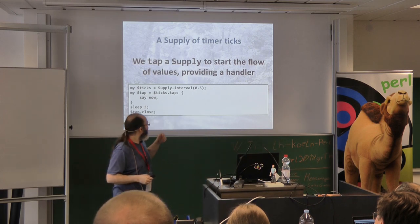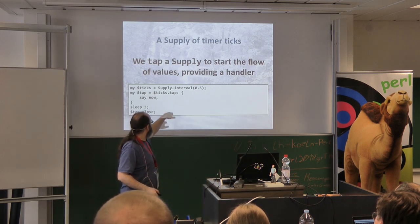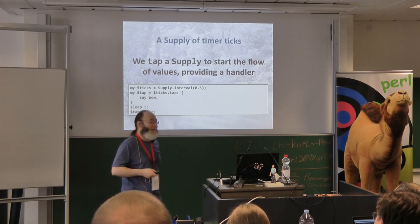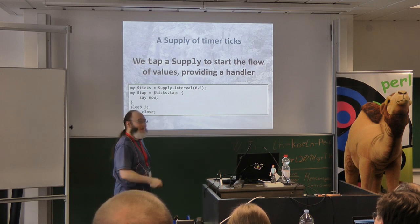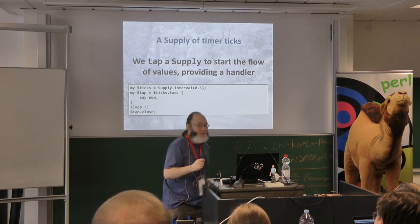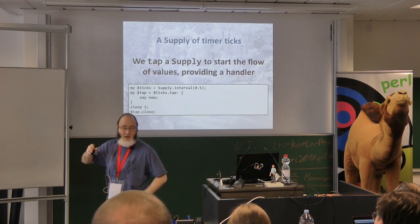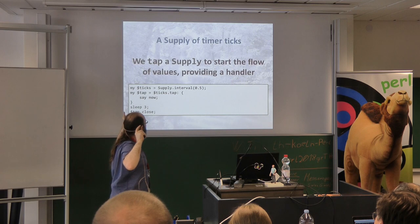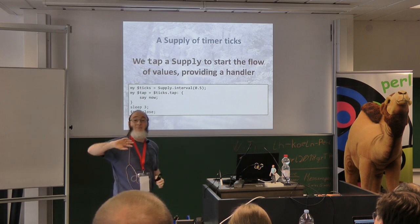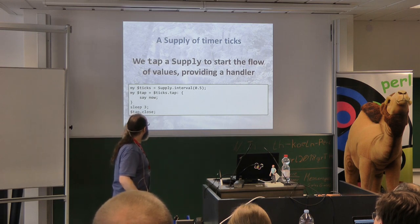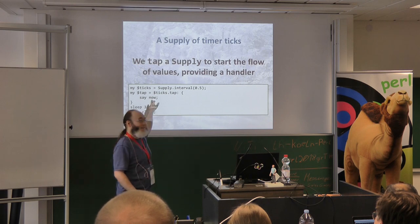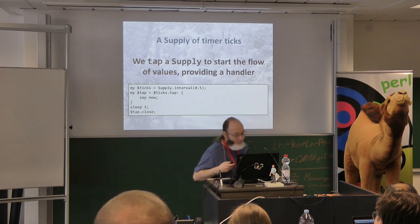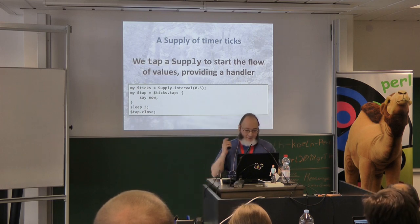A small example: what can we model with a supply? Time. Imagine ticks of a timer — I create a source of ticks saying I want one every half a second, then I tap it. This gives back a tap object representing the subscription, because with an asynchronous data source you have to manually manage it and say 'I'm finished.' Every half second it prints a timestamp; after three seconds of sleeping, we close. The block runs on a thread in the thread pool.